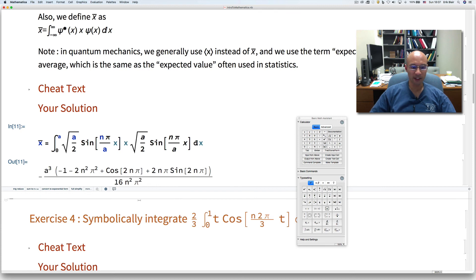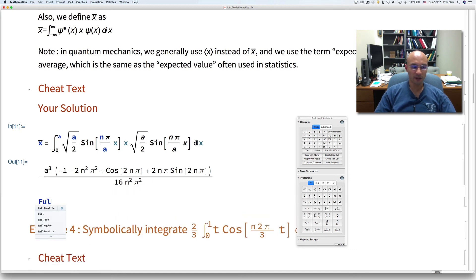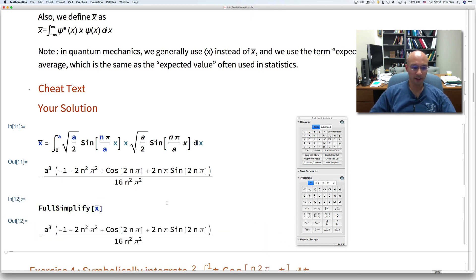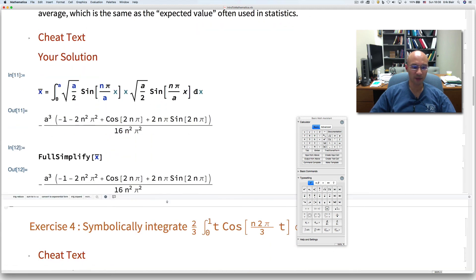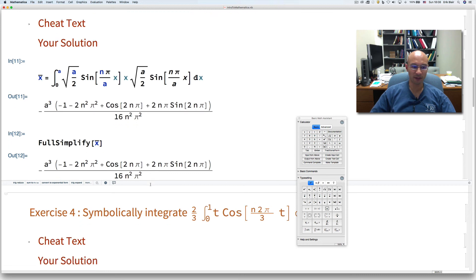Now, sometimes Mathematica can give you a very ugly result, and you can reduce it some using the FullSimplify command. And I'll just put in here x, and then I highlight it, and add the bar again. In this case, Mathematica really didn't do anything to that expression, but there have been cases when I've used FullSimplify, and it really reduces it a lot. Now, other times you can specify some constraints, but we won't worry about that here.